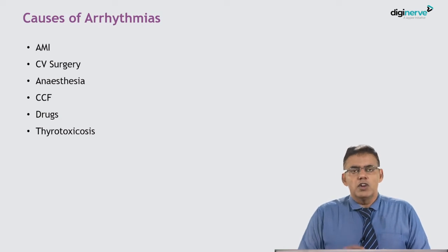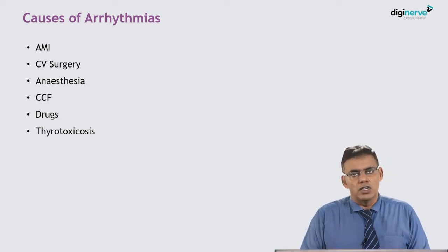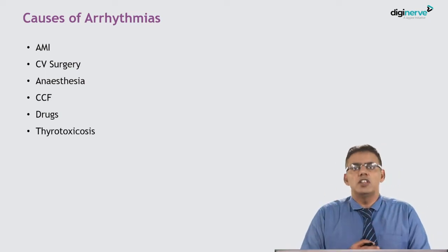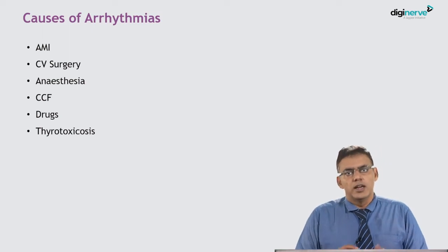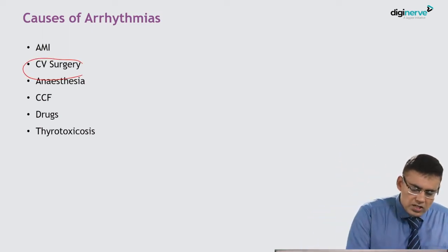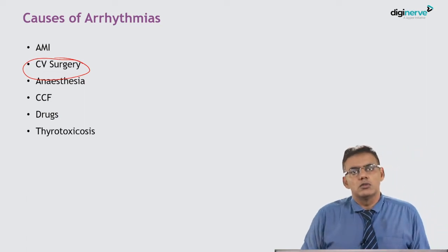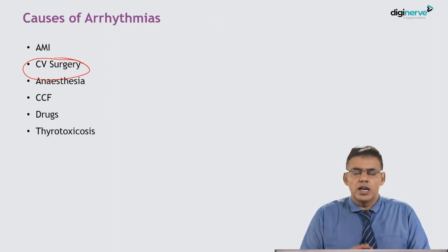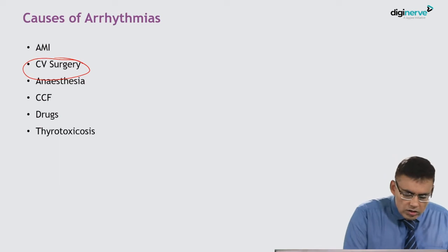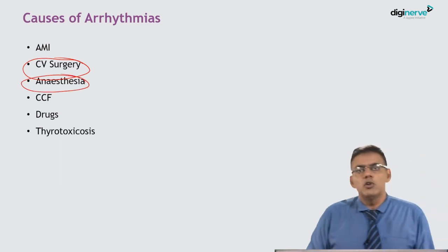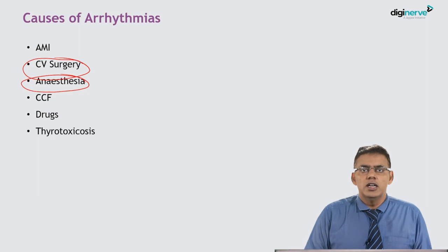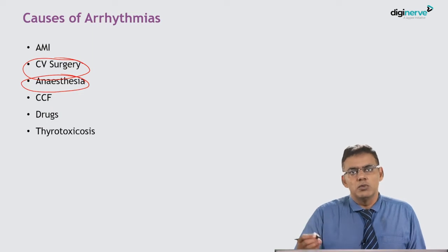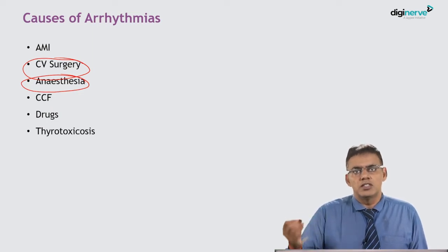One of the most common causes of arrhythmias is acute myocardial infarction. The necrosis destroys myocardial tissue and carries the risk of producing cardiac arrhythmias. It can also be seen in patients undergoing cardiovascular surgery, where scarring and tissue cutting affect the conduction pathways and can produce arrhythmias. It could also happen with anaesthesia — the more notorious are the halogenated hydrocarbons, which sensitize the myocardium to the action of various stimulants normally present in the body.